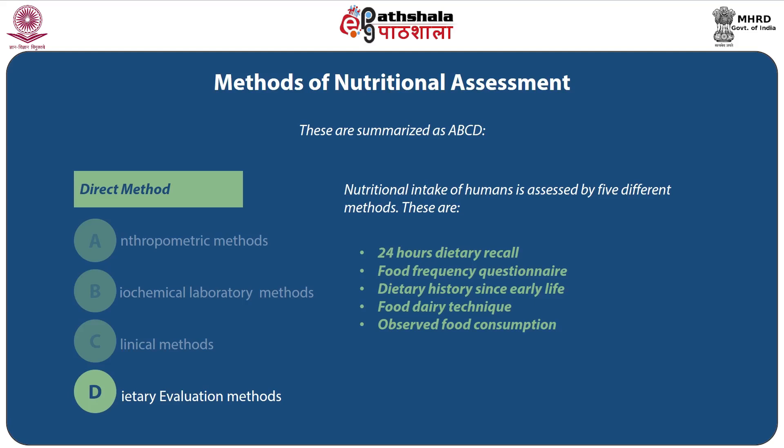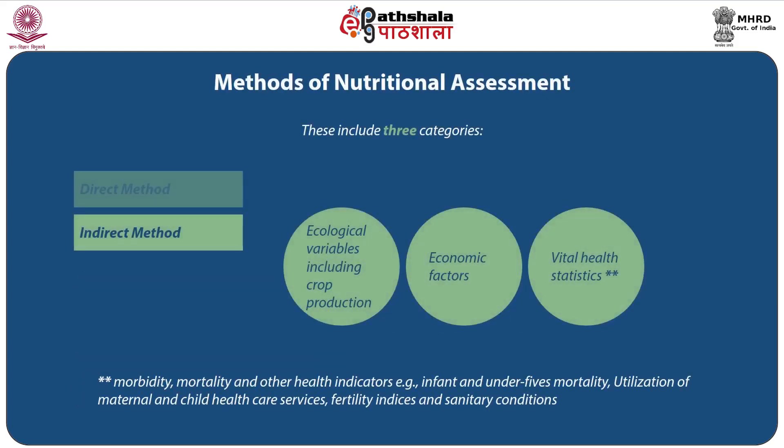Indirect methods include three categories. First, ecological variables including crop production. Second, economic factors such as per capita income, population density, and social habits. Third, vital health statistics including morbidity, mortality, and other health indicators such as infant and under-5 mortality, utilization of maternal and child health care services, fertility indices, and sanitary conditions.